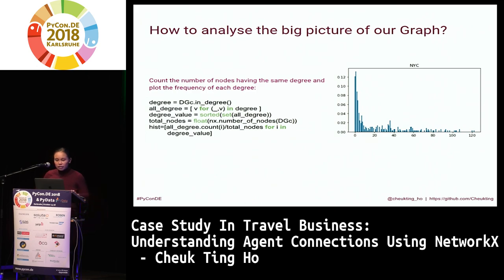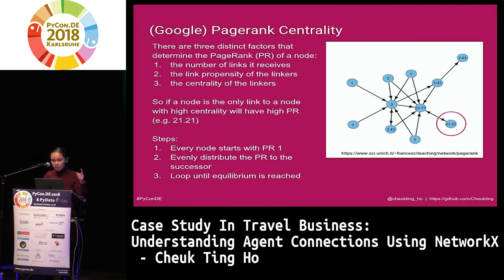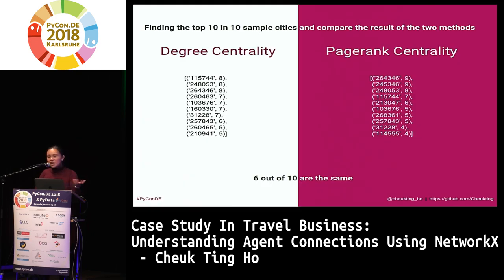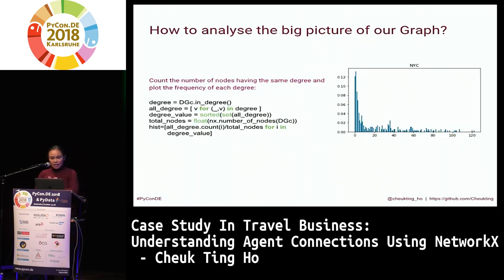That tells me the two algorithms are very similar in this case — meaning the big player is really the big player. There isn't a case where one big player is relying on another behind the scenes. We can also look at the distribution of degrees — counting how many nodes have the same degree. The distribution for New York City is L-shaped, which tells me I should put it on a log-log scale.